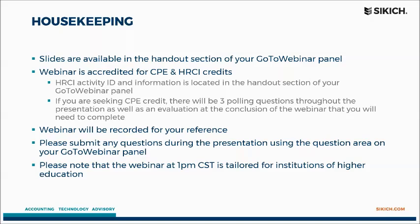Slides are available in the handout section of the GoToWebinar panel. This webinar is accredited for CPE and HRCI credits. The HRCI activity ID and information is located in the handout section of your GoToWebinar panel. If you are seeking CPE credit, there will be three polling questions throughout the presentation as well as an evaluation at the conclusion of the webinar that will need to be completed in order for you to get that credit. Please submit any questions you have during the presentation using the question area on the GoToWebinar panel.